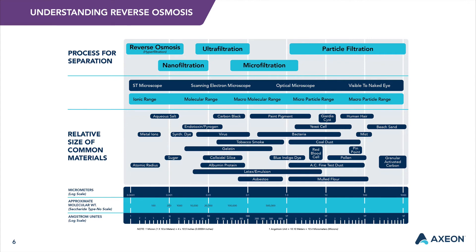The four categories are microfiltration, ultrafiltration, nanofiltration, and reverse osmosis. Reverse osmosis is among the finest levels of filtration available. The RO membrane generally acts as a barrier to all dissolved salts and inorganic molecules, as well as organic molecules with a molecular weight greater than approximately 100. Water molecules, on the other hand, pass freely through the membrane, creating a purified product stream. Rejection of dissolved salts is typically 95% to greater than 99%, depending on factors such as membrane type, feed composition, temperature, and system design.